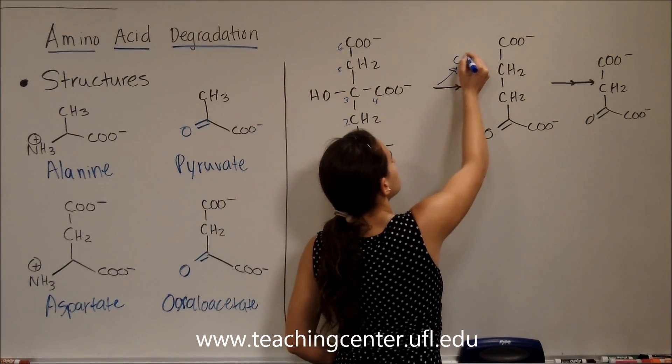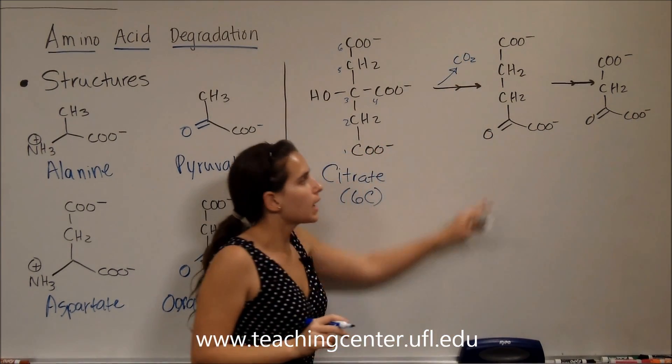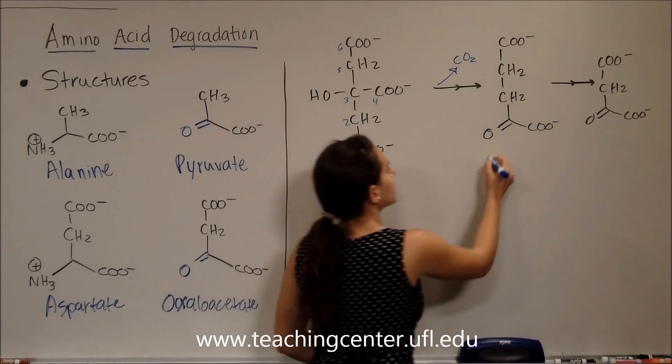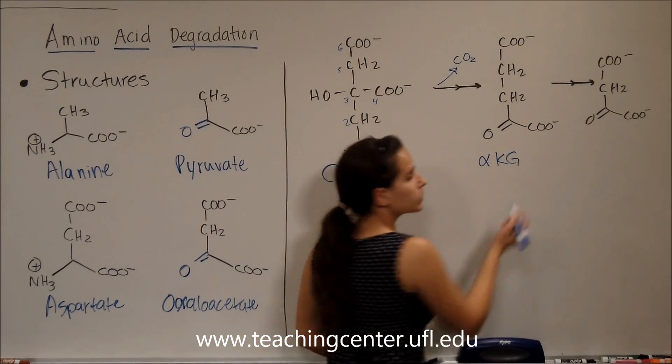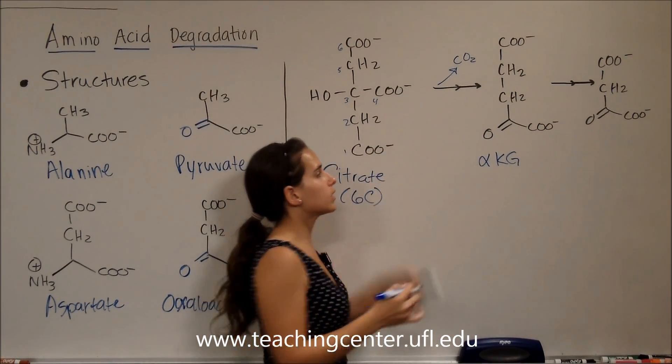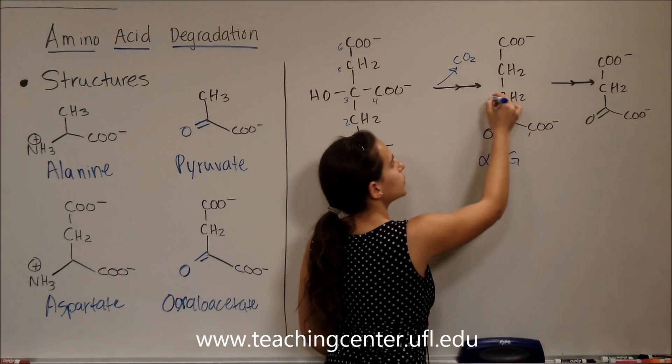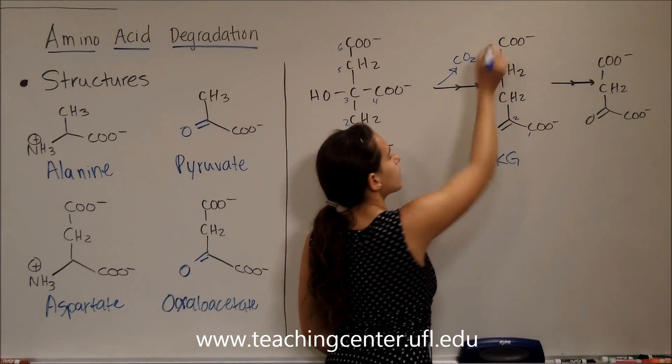And through several steps, we're going to lose the CO2, right? And we're going to get alpha-ketoglutarate, which is going to have five carbons because we lost one. It's going to be one, two, three, four, five.